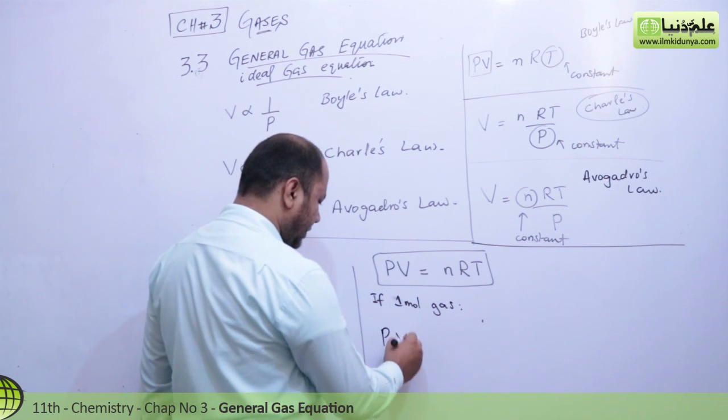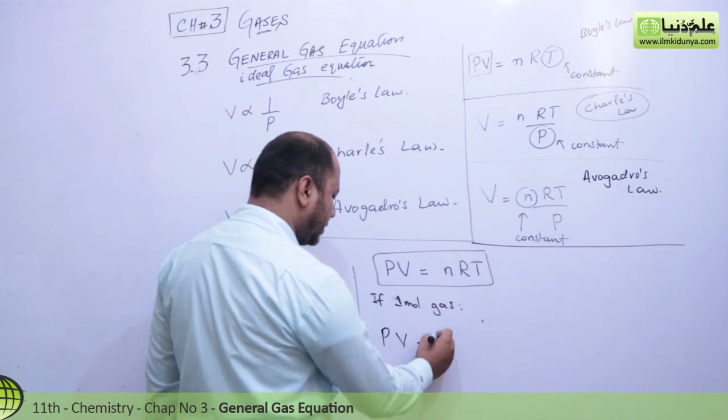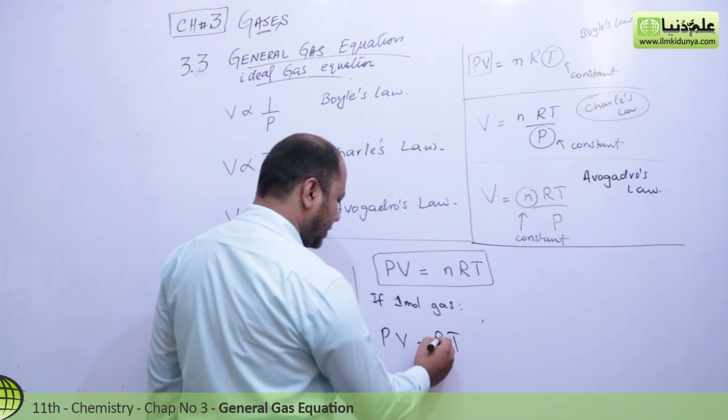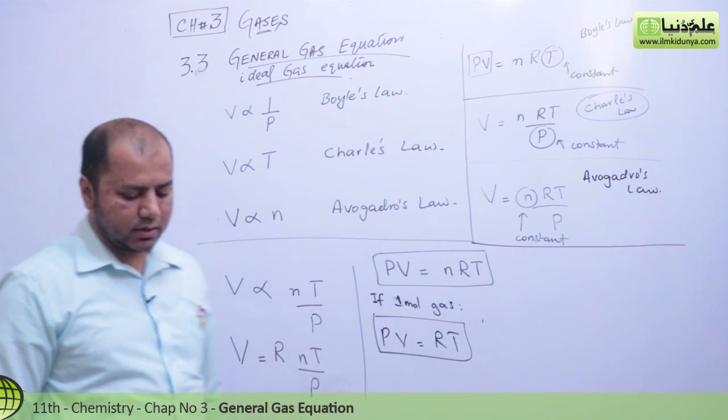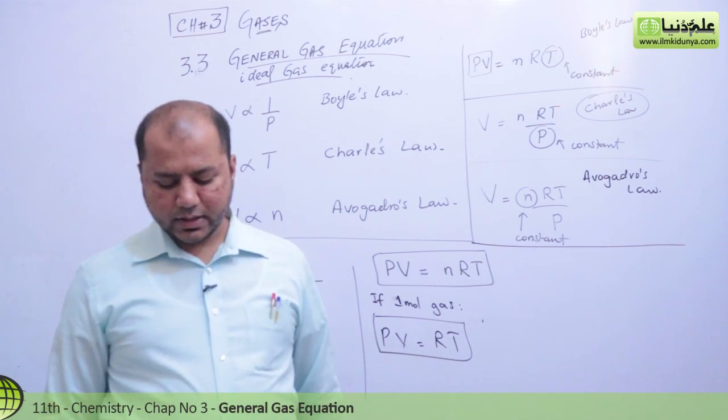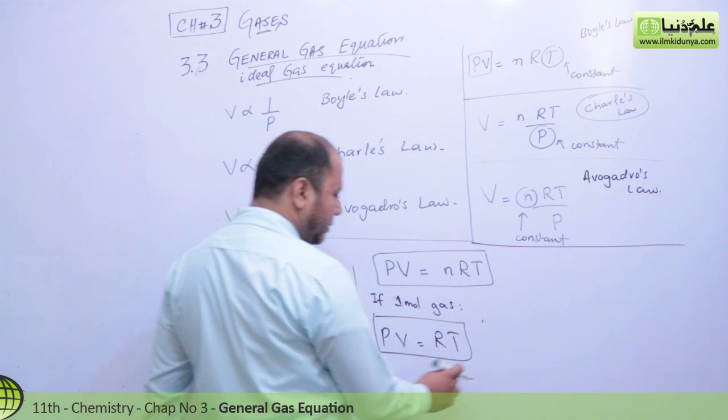If one mole of gas is there, PV equals, n becomes 1, so it becomes RT. The general gas equation for one mole is PV equals RT. If you want to take out the value of R from it, PV over T equals R.